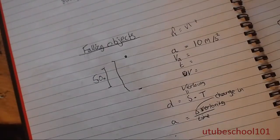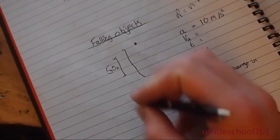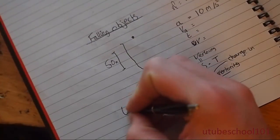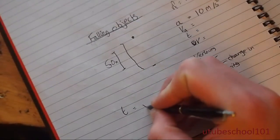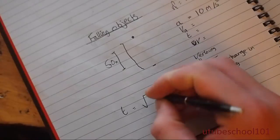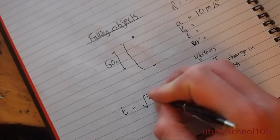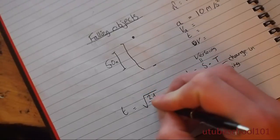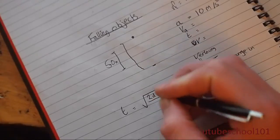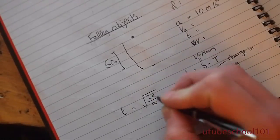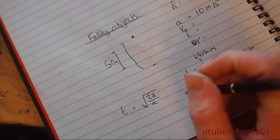First of all, we're going to work out time. We can work out time by using the following equation: 2 times the distance divided by the force of gravity, which is the acceleration, equals time.